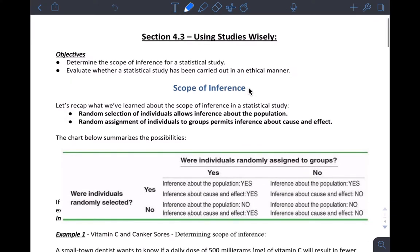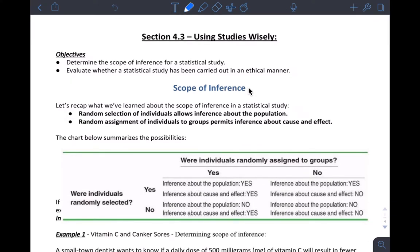Anyways, section 4.3 is basically a summary of what am I supposed to be able to do with my results of my studies. So we did experimentation, observational studies, and then sample surveys as a subset of the observational studies. So scope means what am I allowed to do with this, where can I go with these results, or what do these results mean for some larger population or in general.